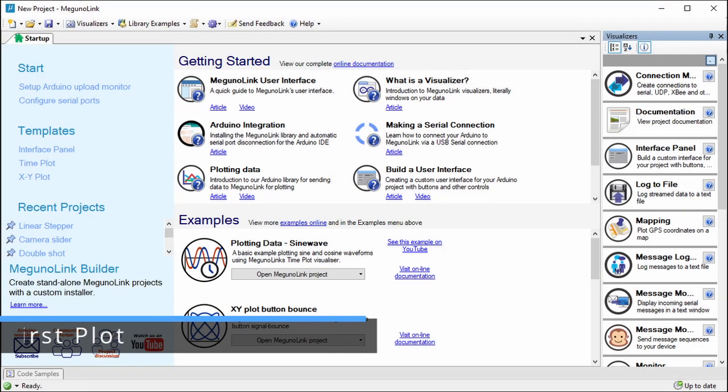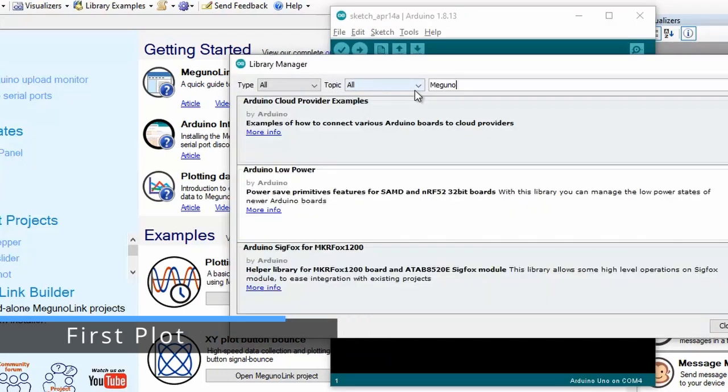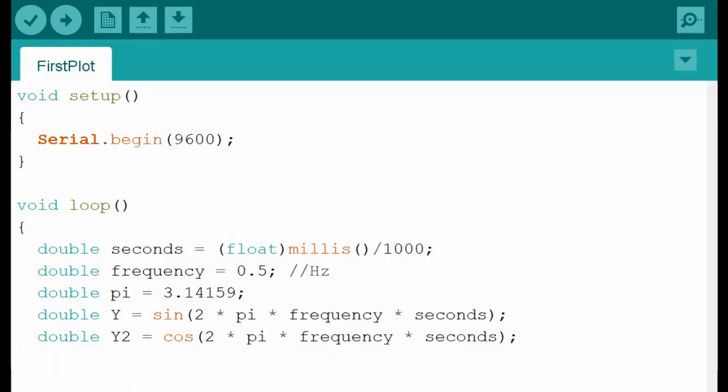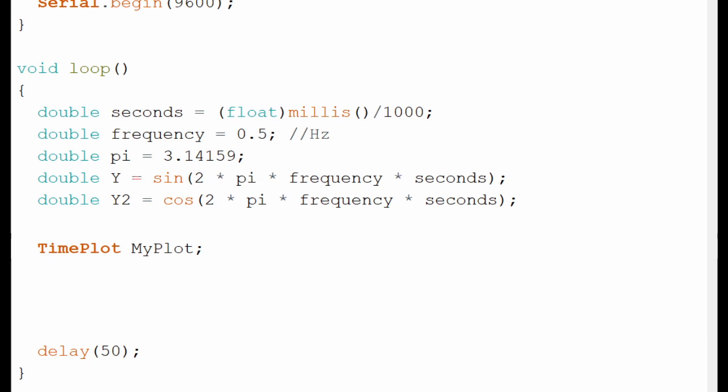We've built a library to send data and commands to MagunoLink from your Arduino sketch. I'll link to it in the description. Once you've got the library installed, plotting from your Arduino sketch is as easy as including the MagunoLink library, creating a plot variable, and then calling its sendData method.